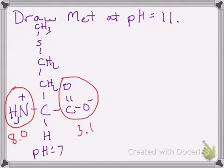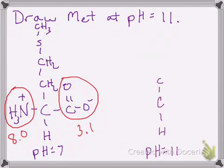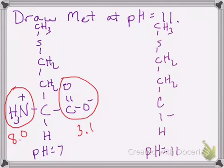So what that means is I can now start drawing this structure at pH 11. Everything not circled will not change based on pH, so I'll go ahead and draw those pieces in. I know at pH 11, because they do not change based on pH, those parts will remain the same. The only two groups that might change are the carboxyl group and the amine group.